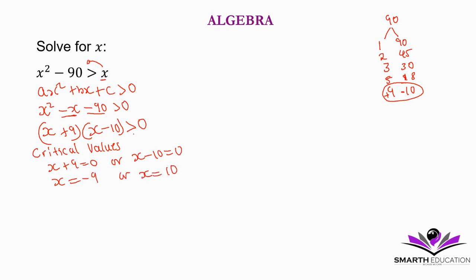The function is greater than 0, so it means it is above the x-axis. This is a quadratic function. And then these are the critical values. We have negative 9 and positive 10. Where is the function above the x-axis? This is y is equal to 0. The x-axis is y is equal to 0.